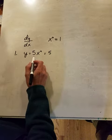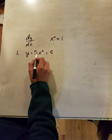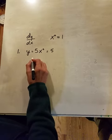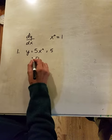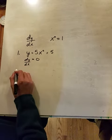So when we go ahead and take the derivative of this, we're going to multiply the power times the coefficient. That's 0 times 5. That is going to give us 0. So dy dx is equal to 0 on that one.